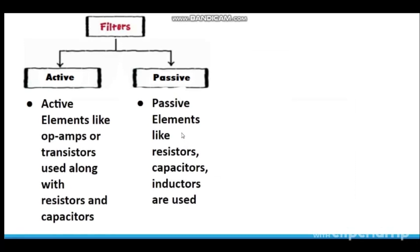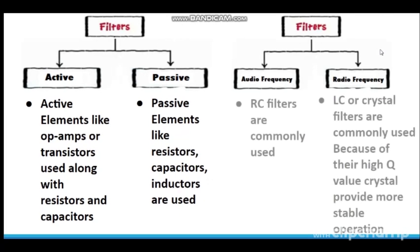Depending on the type of elements used in the construction of filters we have another classification here. Filters are classified into active type and passive type. Active elements like op-amps or transistors are used along with resistors and capacitors in case of active filters, and passive elements like resistors, capacitors and inductors are used in case of passive filters. Again we have one more classification. Filters are classified into audio frequency type or radio frequency type. RC filters are commonly used for audio or low frequency operation, whereas LC or crystal filters are employed at radio frequency or high frequency.